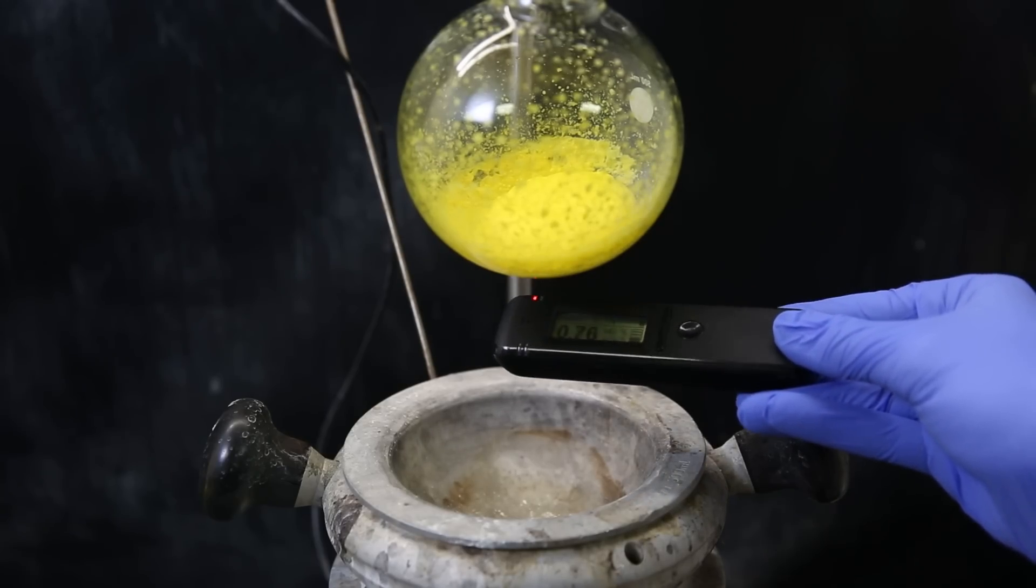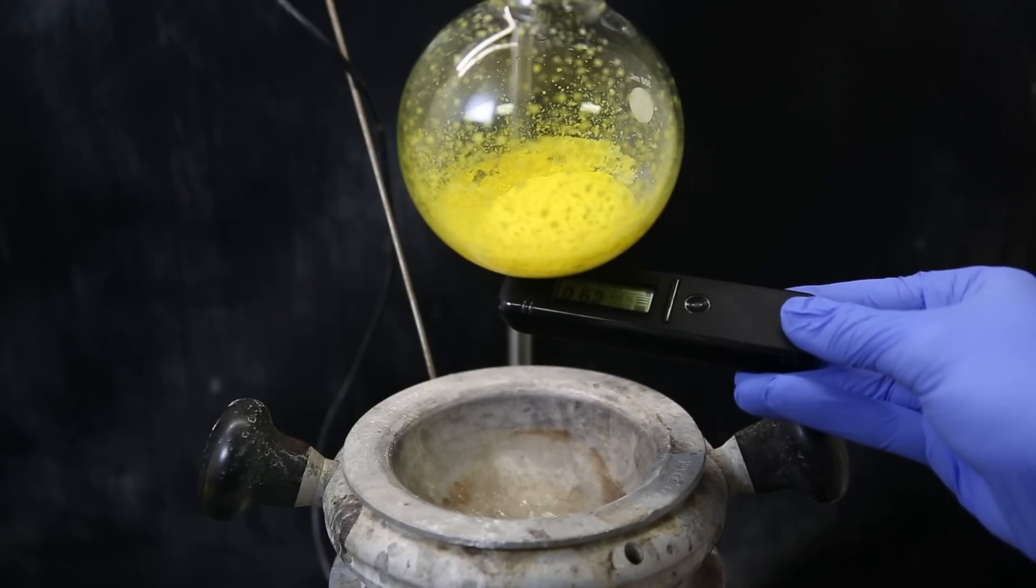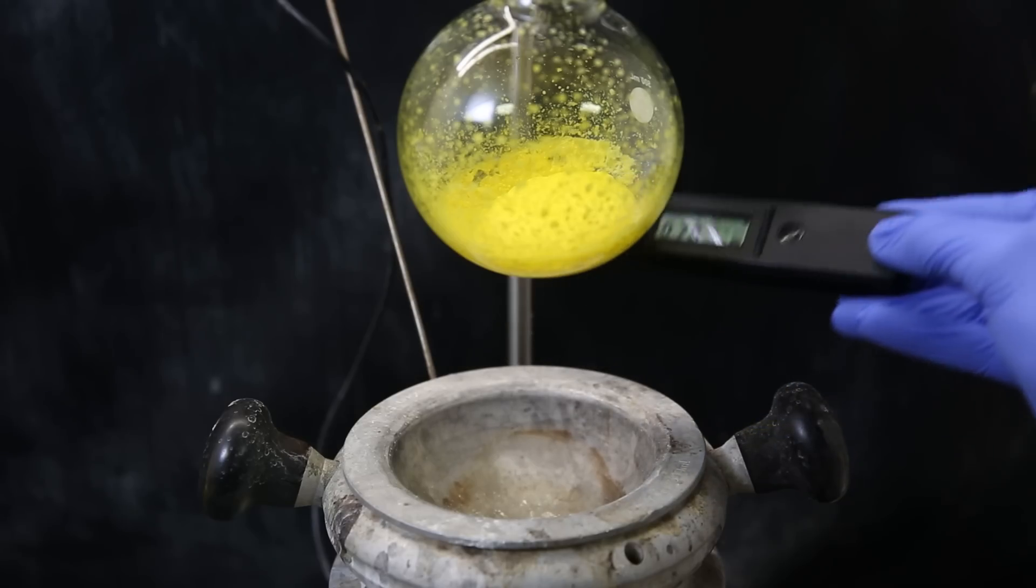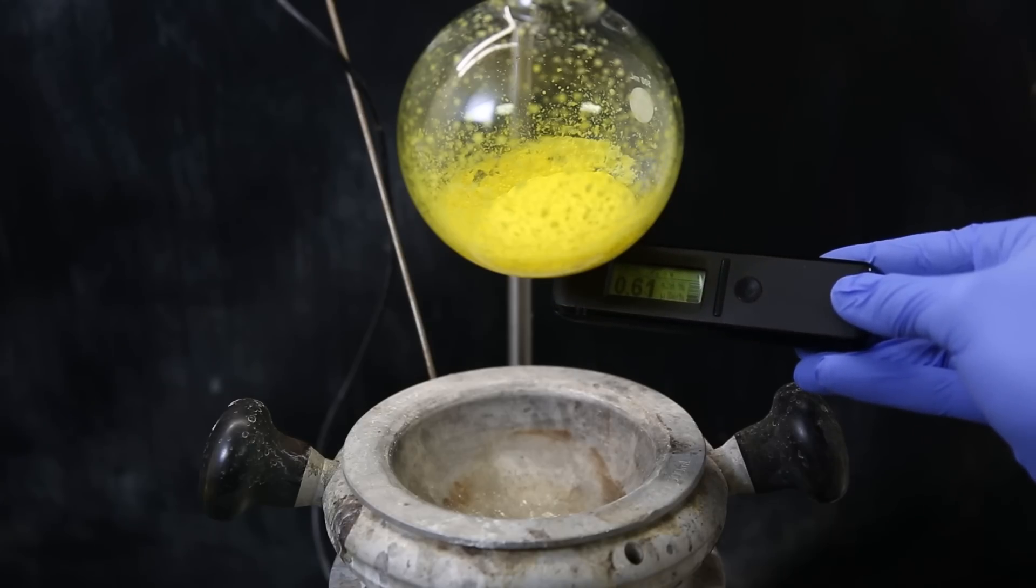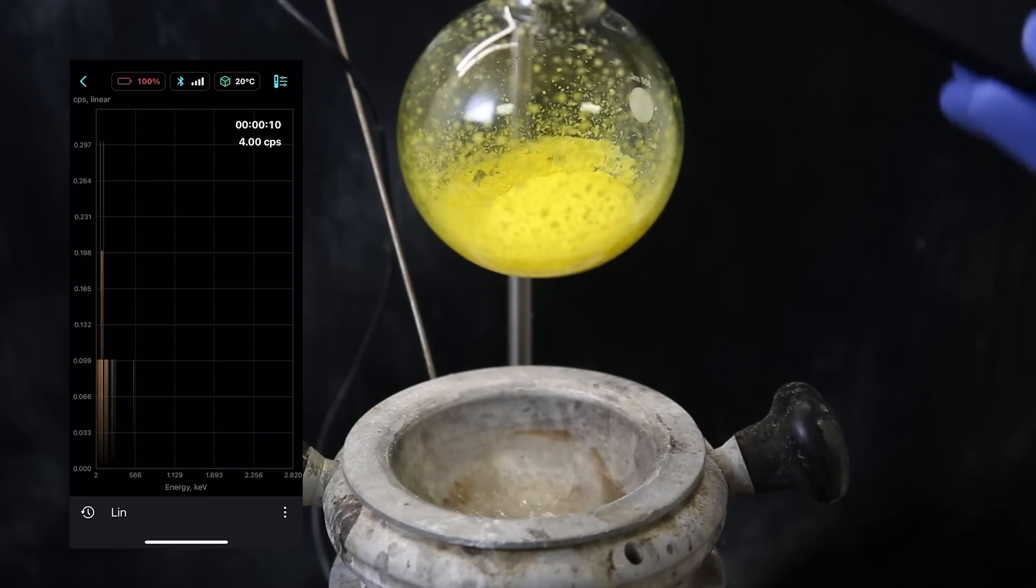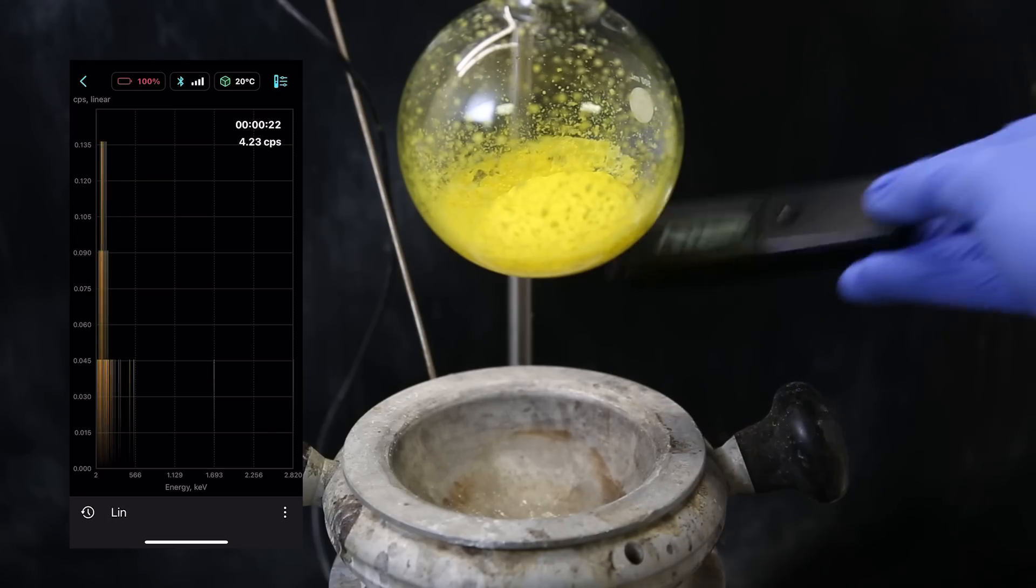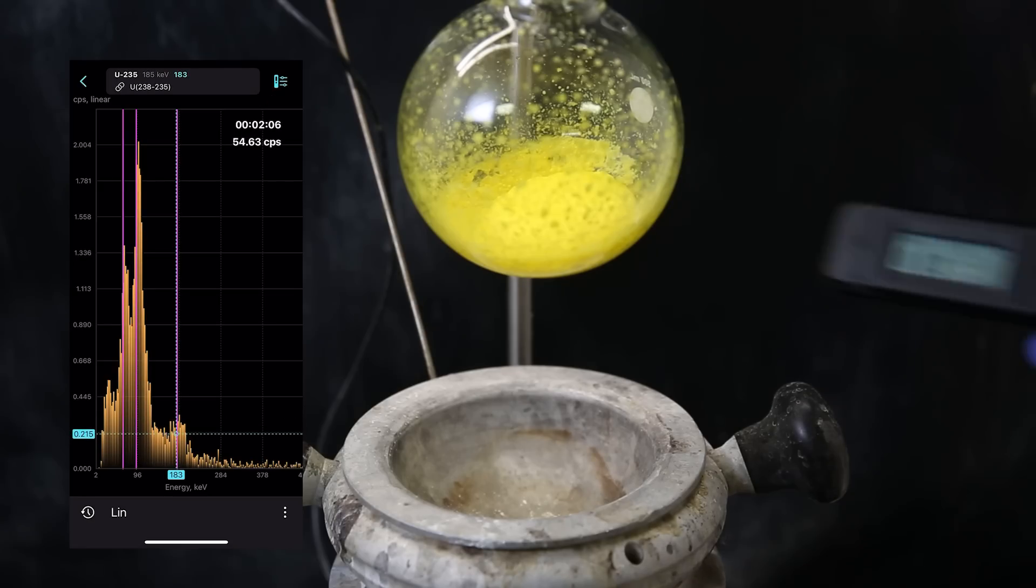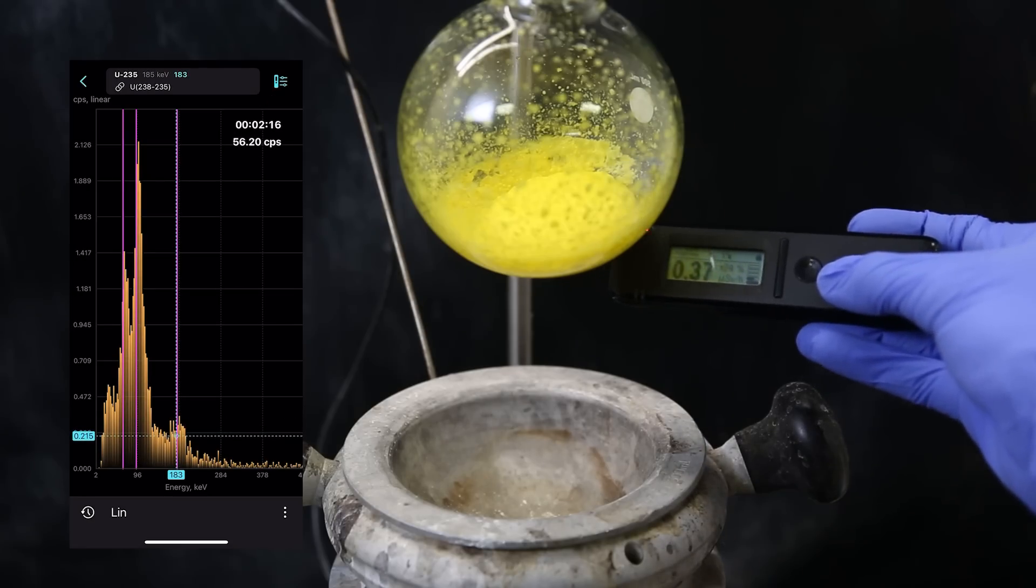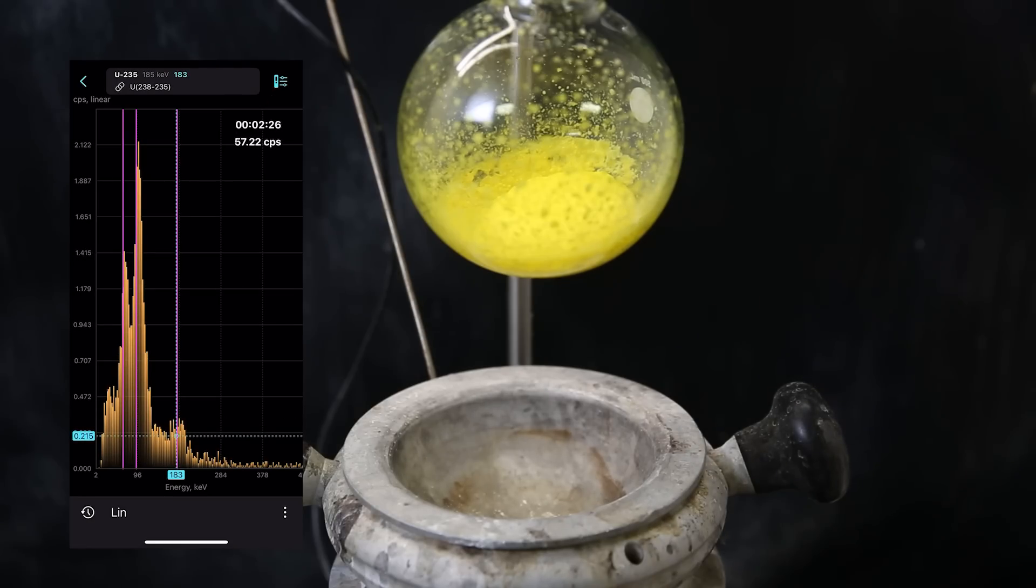Because it's also a spectrometer, we can also identify which radioactive isotopes are in our sample, as they emit gamma radiation at energies that are specific to them. If we allow the Radiocode to measure the radiation for a minute and collect some data, we can see the spectrum in the app and identify isotopes that form from the radioactive decay of uranium. So with gamma spectroscopy, we can confirm that we have uranium in this sample.